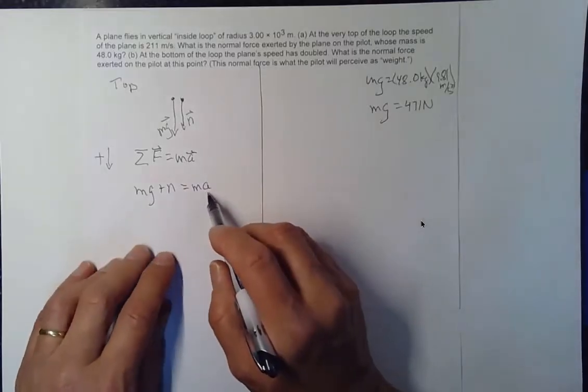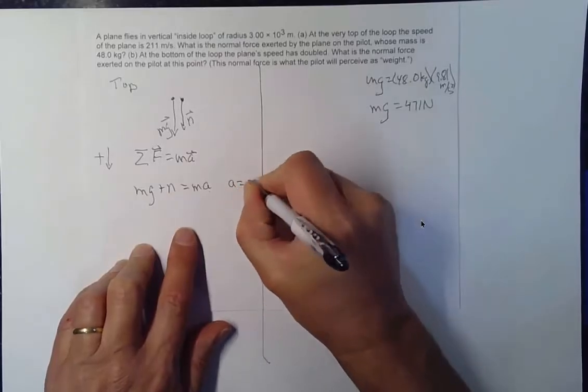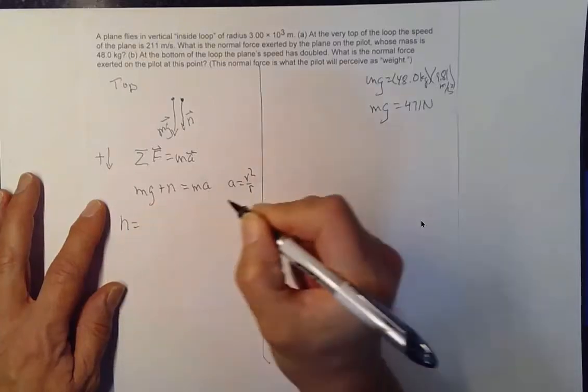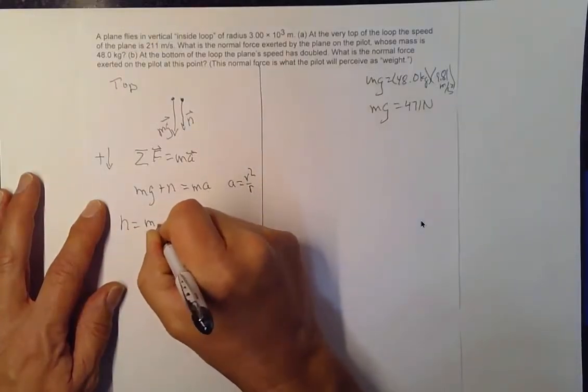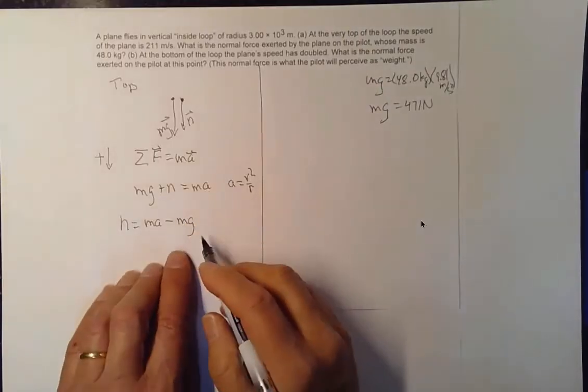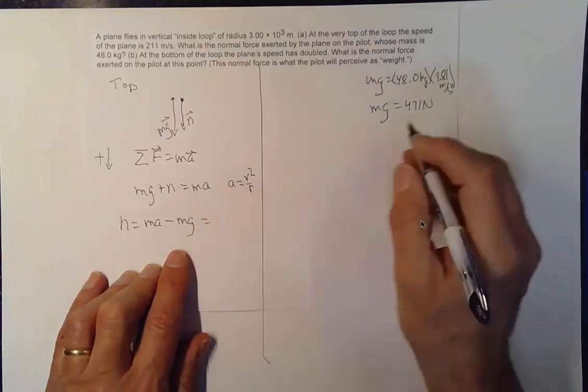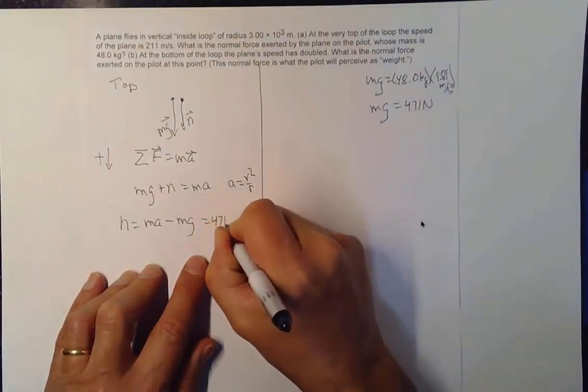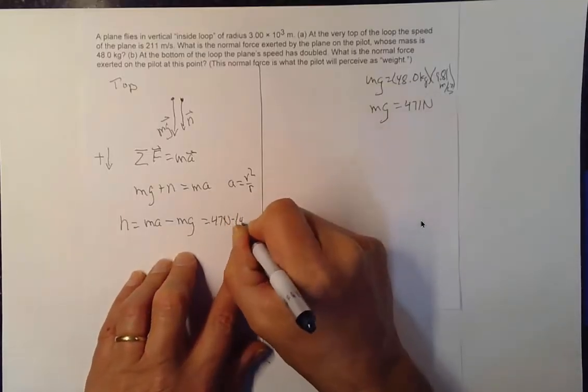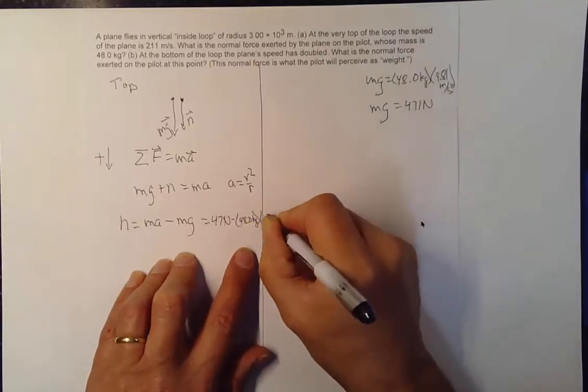Well, let's see. They're traveling in a circle, so I know what the acceleration is going to look like. It's going to be V squared over R. So the normal force in this case will be MA minus MG. And what we'll have is, let's see, I already know that one is 471 newtons. That's minus their mass, 48.0 kilograms times V squared over R.